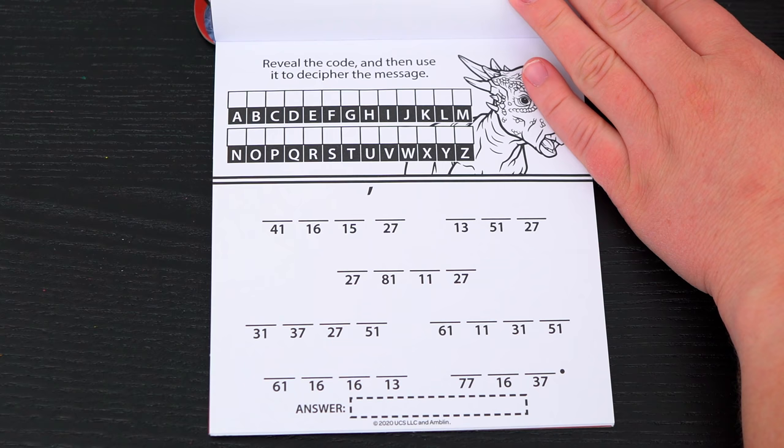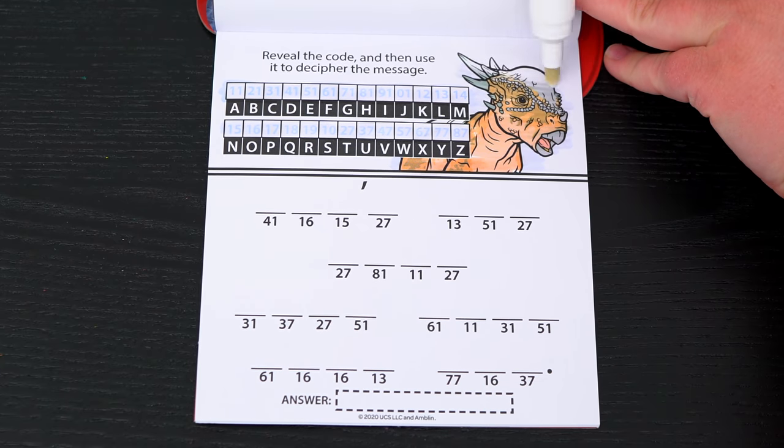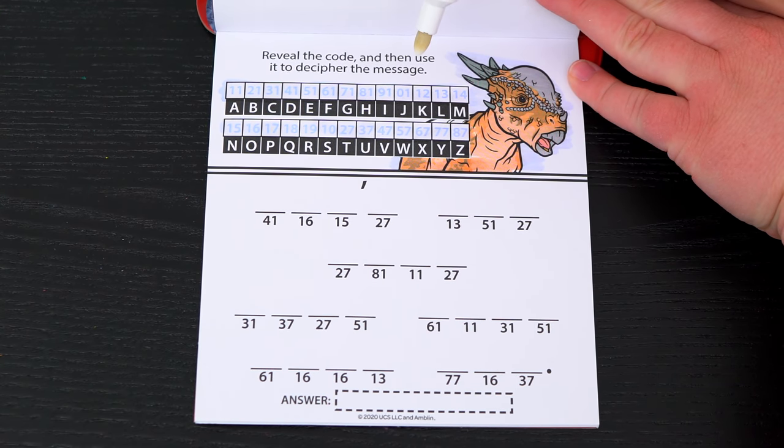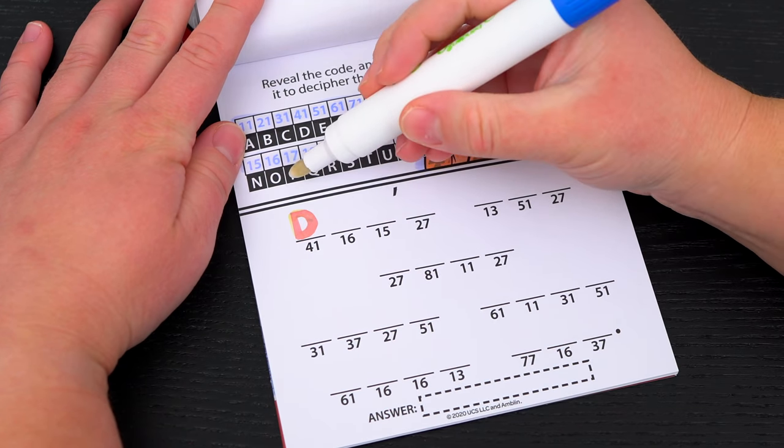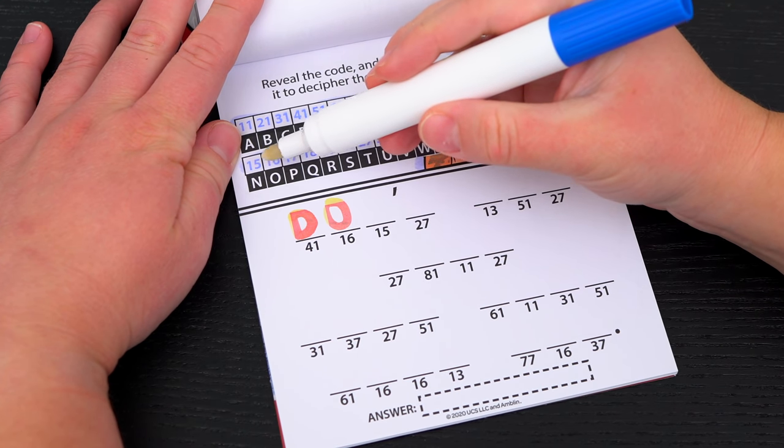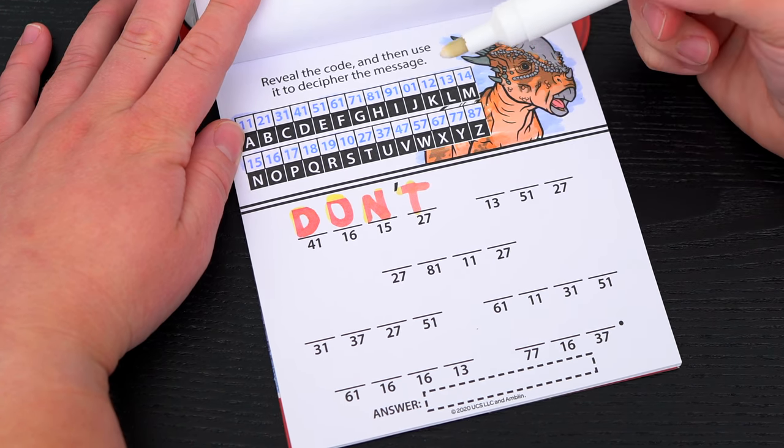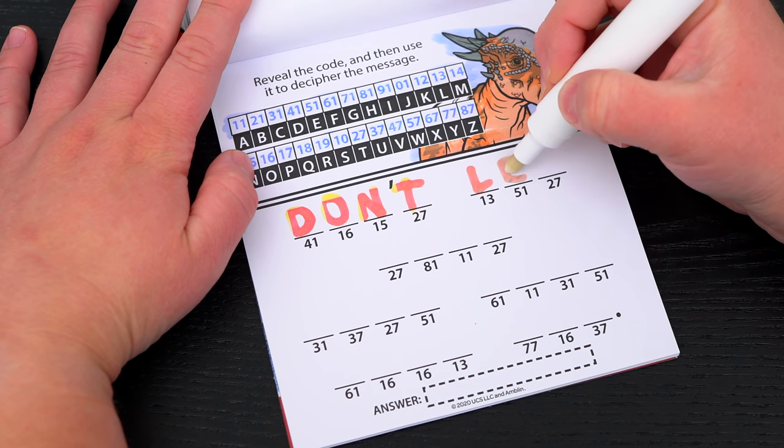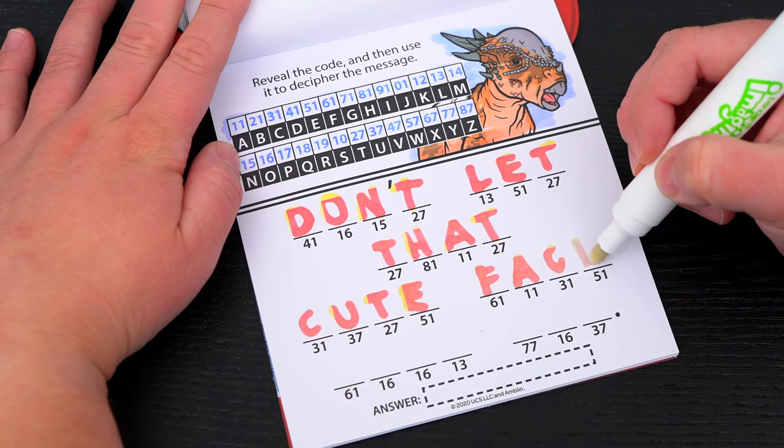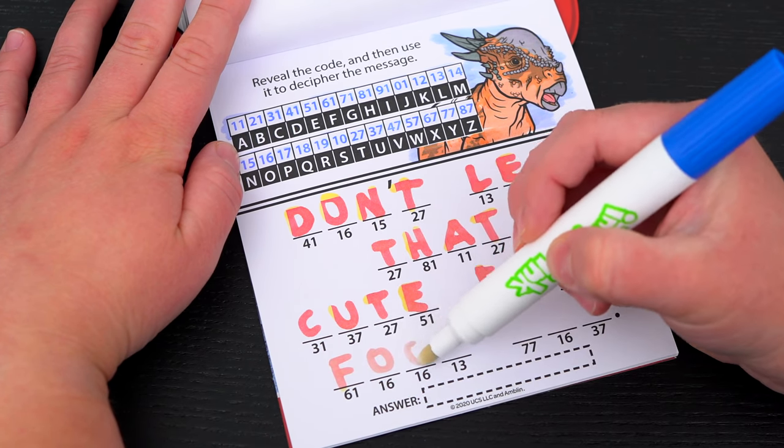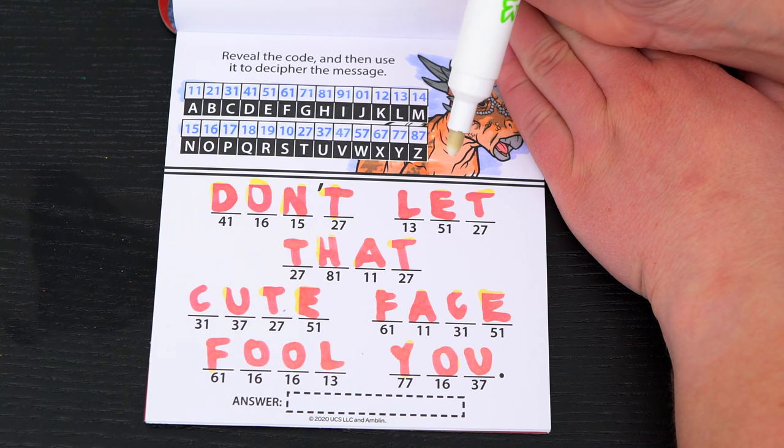Reveal the code, and then use it to decipher the message! Okay, so here's our code! Now let's decipher this message! So 41 is D, 16 is O, 15 is N, and 27 is T! Okay, so our first word is don't! Now let's fill in the rest of the message! Okay, so here's the whole message! It says don't let that cute face fool you! Aw, that dinosaur does have a cute face!